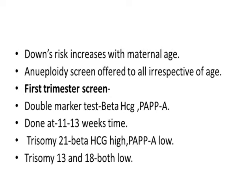First trimester screening is offered to all mothers to identify anomalies early. It mainly involves the double marker test — two markers are used: beta-HCG and PAPP-A — performed at 11 to 13 weeks. In trisomy 21, beta-HCG is high and PAPP-A is low. In trisomies 13 and 18, both beta-HCG and PAPP-A are low. This is a screening test, not confirmatory; further invasive testing or karyotyping is needed to confirm.